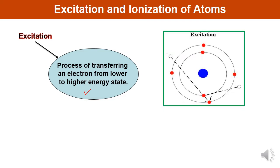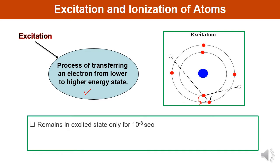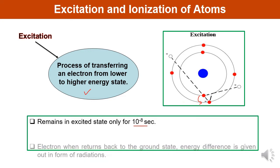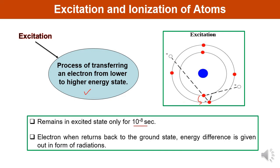In this diagram, the electron is available here and it has been transferred to a higher energy state by providing additional energy. The electron remains in the excited state only for about 10 raised to the power minus 8 seconds. After this duration, it will again come into its original orbit. When the electron returns back to the ground state, the energy difference is given out in the form of radiation.